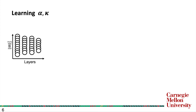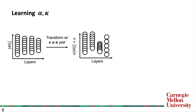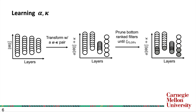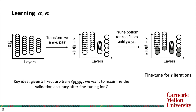To learn alpha and kappa, we first need to understand how they are used in filter pruning. Assuming we have a four-layer network with each circle representing a filter — given an alpha-kappa pair, we can transform the filter norm into a global importance metric. We can then prune the bottom-ranked filters until some FLOPs constraint is met. The resulting network is then fine-tuned for T_finetune iterations to produce a pruned network. Given a fixed arbitrary zeta-FLOPs constraint, we want to maximize the validation accuracy after fine-tuning. Here, zeta-FLOPs and T_finetune are two hyperparameters detailed in the paper.